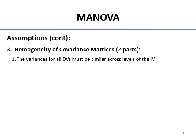Number one: the variances of all DVs must be similar across levels of the IV — that's just the homogeneity of variances assumption. The second part is that the covariances for DVs must also be similar. This is like Mauchly's sphericity assumption from repeated measures ANOVA. The spread of scores for each DV is about the same across all levels of the IV, and the correlations between the DVs are about the same — so correlation between DV1 and DV2 should be similar in magnitude to the correlation between DV1 and DV3, and so on.